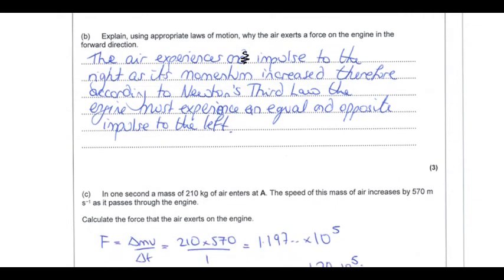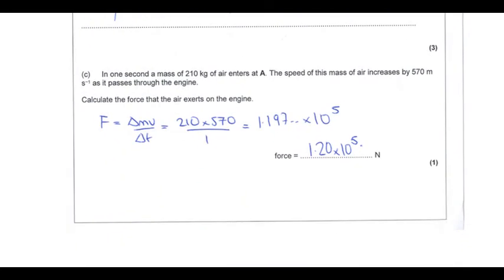In one second, a mass of 210 kg of air enters and its speed increases by 500 metres per second. Using Newton's second law, the force equals the rate of change of momentum: mass times velocity change per second. This gives a force of 1.20 times 10 to the 5 newtons to three significant figures, matching the precision of the data.